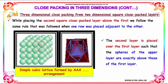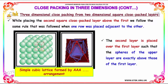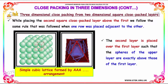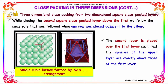We follow the same rule that was followed when one row was placed adjacent to another. The second layer is placed over the first layer such that the spheres of the upper layer are exactly above those of the first layer. This forms a simple cubic lattice through an AAA arrangement.